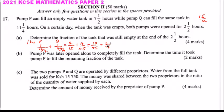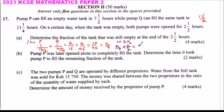In 2 and a half hours, since the two pumps fill 2 over 9 in 1 hour, you multiply 2 over 9 by 2 and a half, which is 5 over 2. When you multiply this, you get 5 over 9. So in 2 and a half hours, the two pumps fill 5 over 9 of the tank.